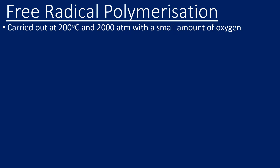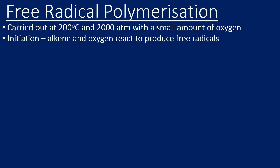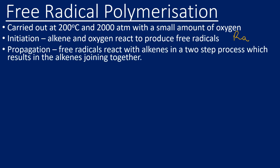The conditions for this reaction are 200°C and 2000 atmospheres — a very high pressure — and we need a small amount of oxygen. The first thing that happens is the oxygen and the alkene react to form free radicals. I'll use the general term 'R•' to represent a radical. The first propagation step — the second stage of the reaction — has two steps, and this is the main part of the process where lots of alkenes join together. The radical from initiation reacts with the ethene and joins to it, producing another free radical.